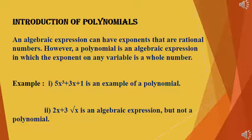Polynomials is an expression which consists of constants, variables, and exponents. Here are some examples of polynomials. The first example: 5x cubed plus 3x plus 1 — this is a polynomial. But in the case of the second example, 2x plus 3 root x is an algebraic expression but not a polynomial.